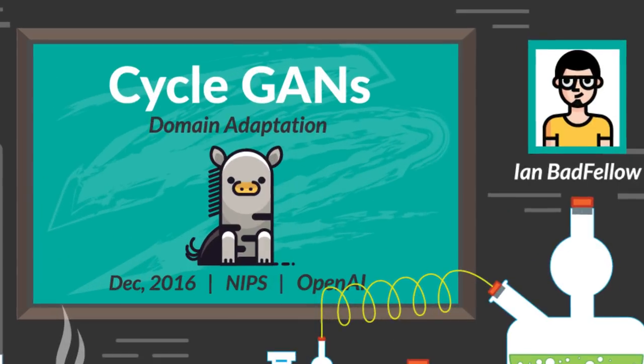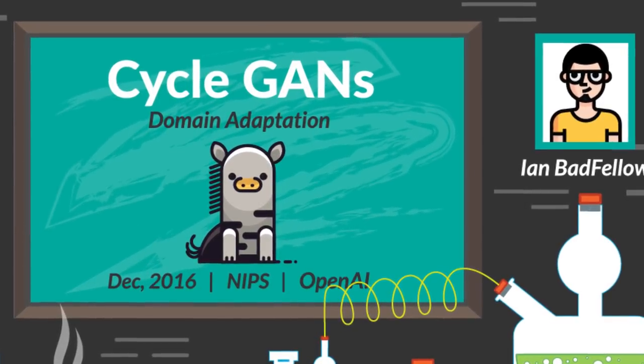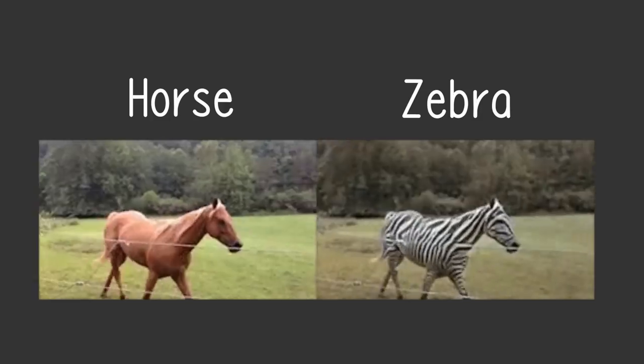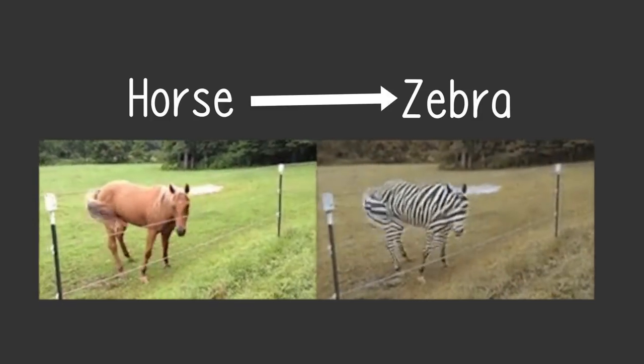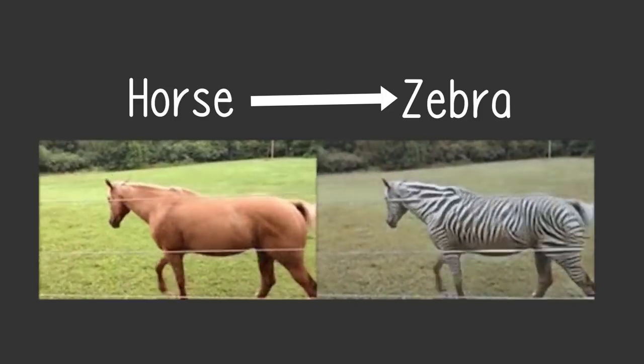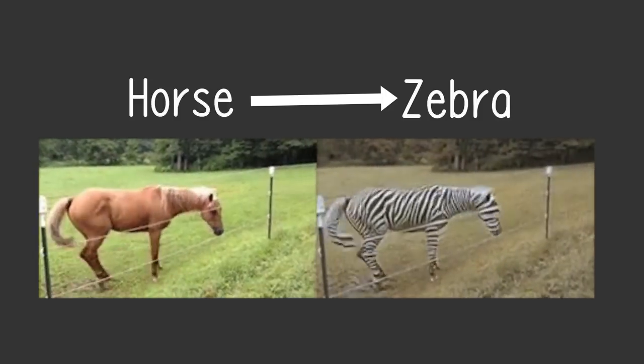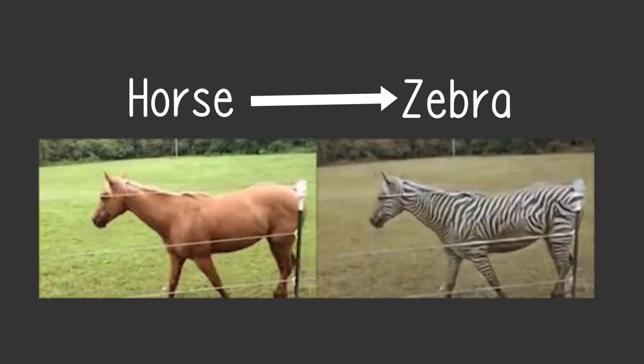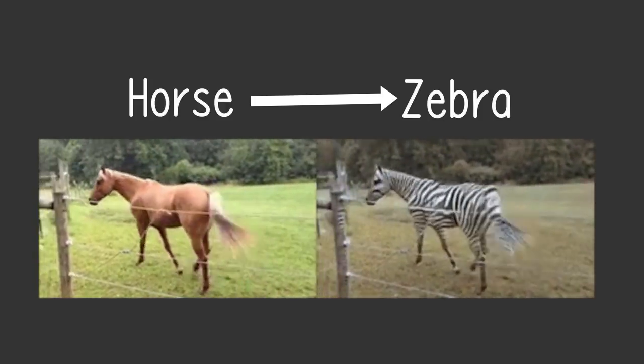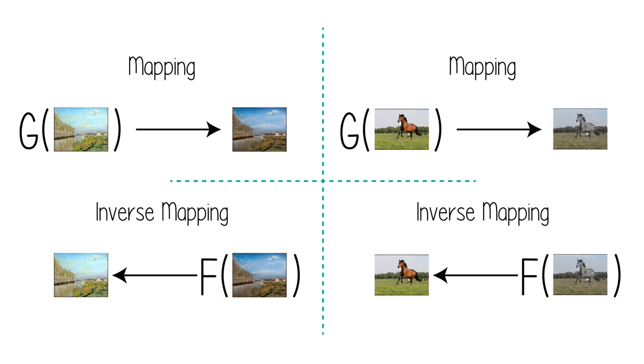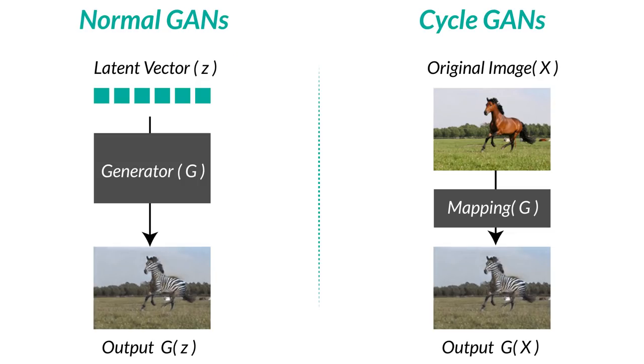Next up, we have CycleGANs. The idea used in CycleGANs is truly amazing. Learning direct domain transfer is quite interesting. I guess this horse to zebra image mapping has done a lot of rounds on Twitter and other social media. And why not? It's worth it. The goal here is to learn the mapping G of X to Y. The generator is not picking up some latent vector to generate. Rather, it is using the image to bootstrap.